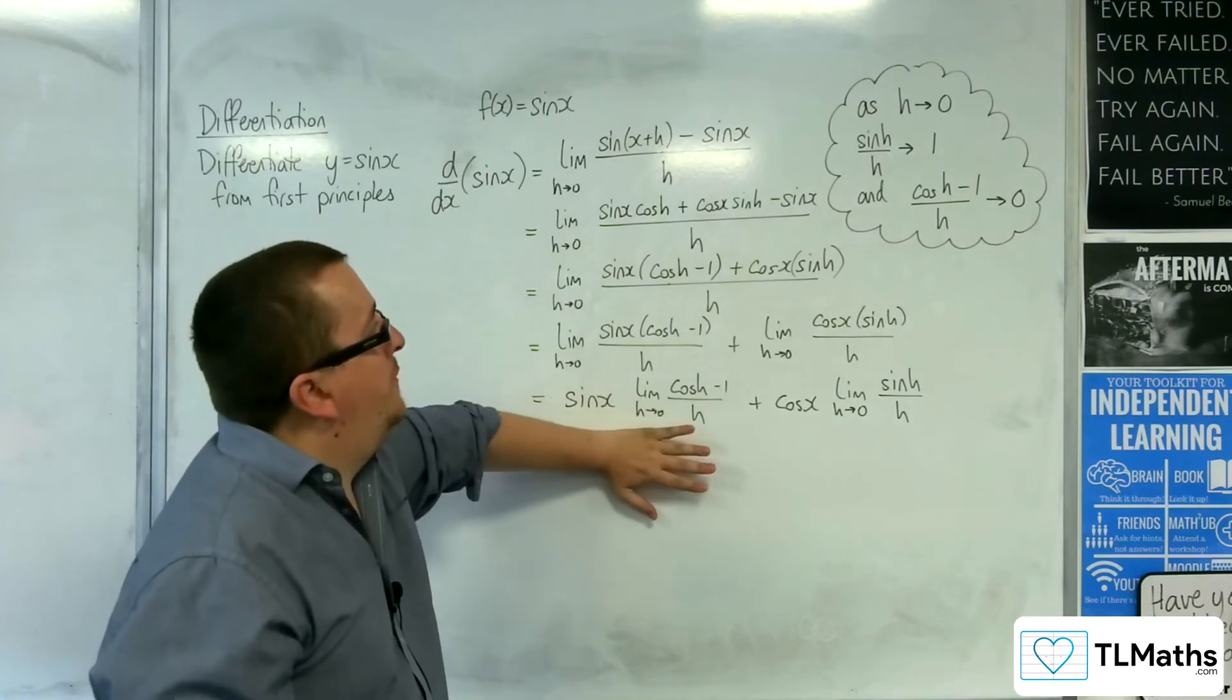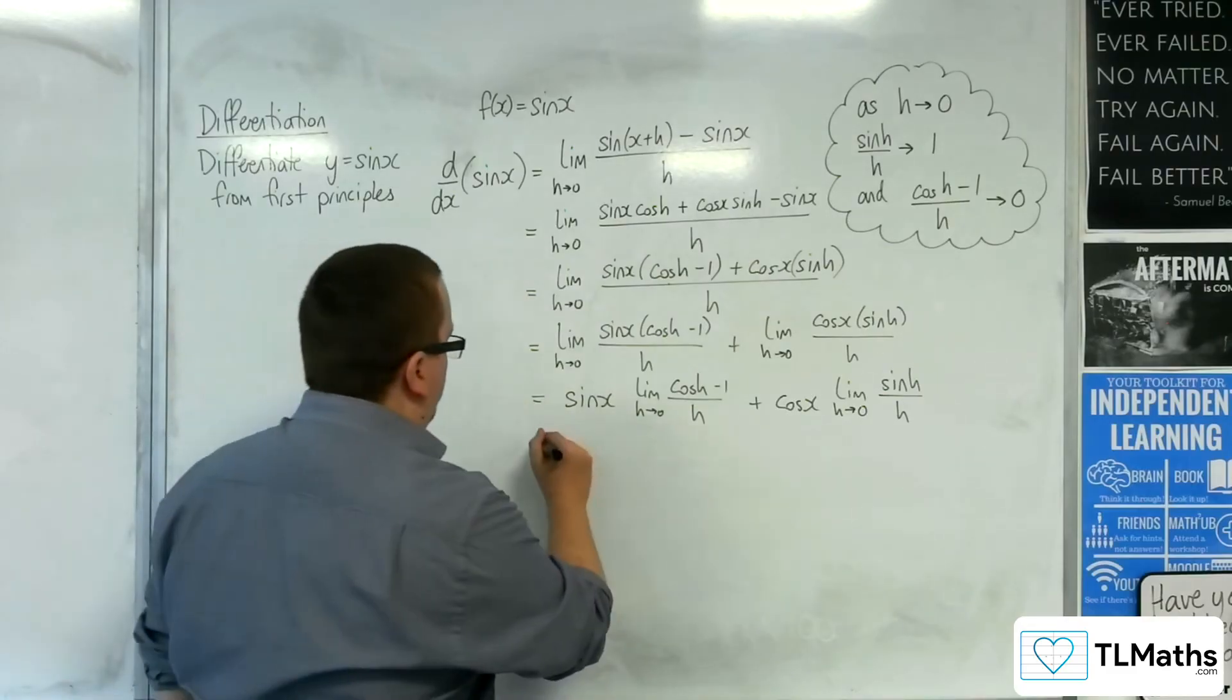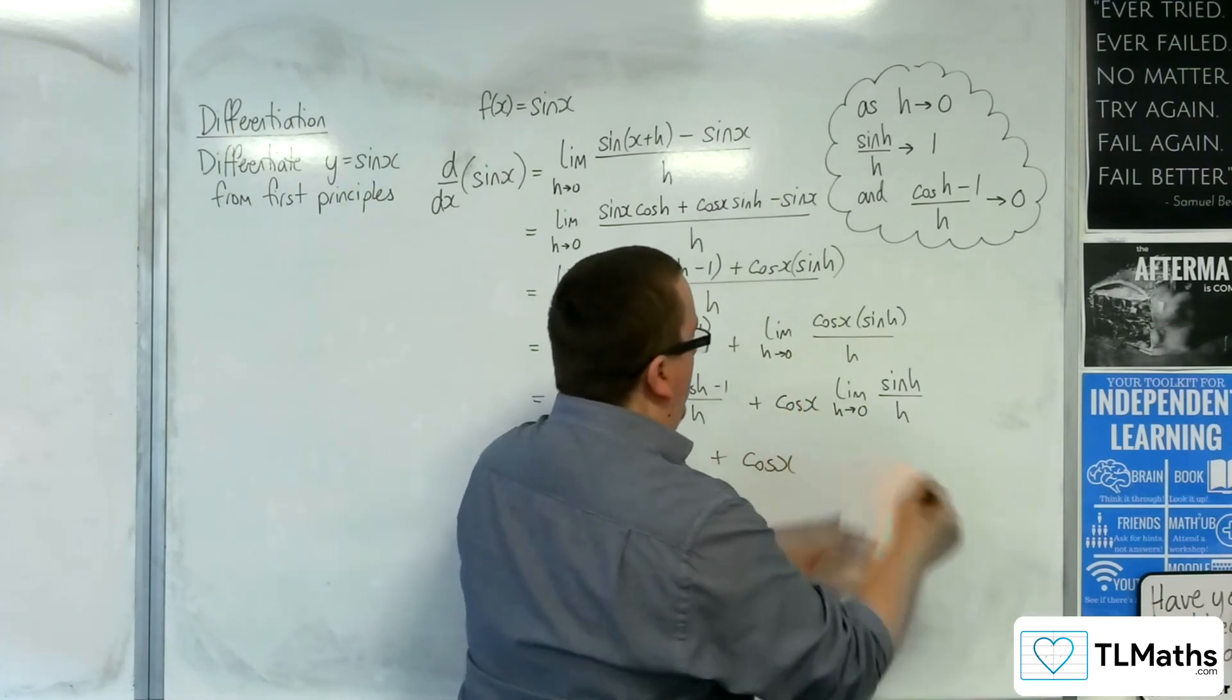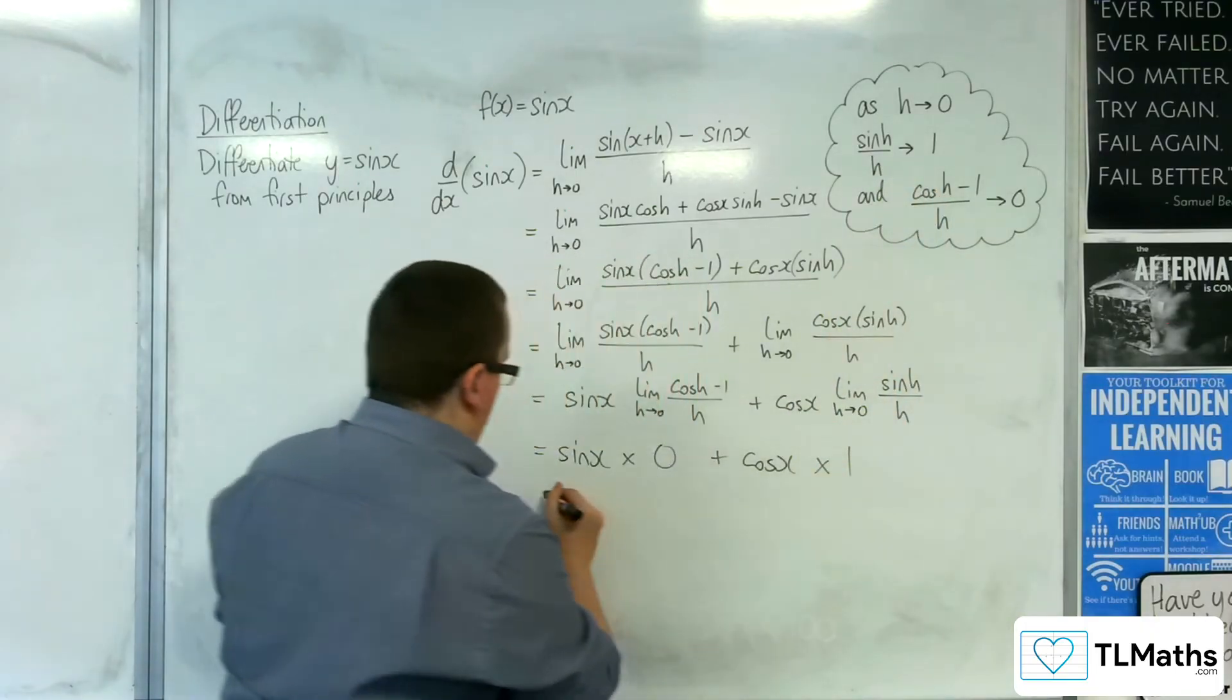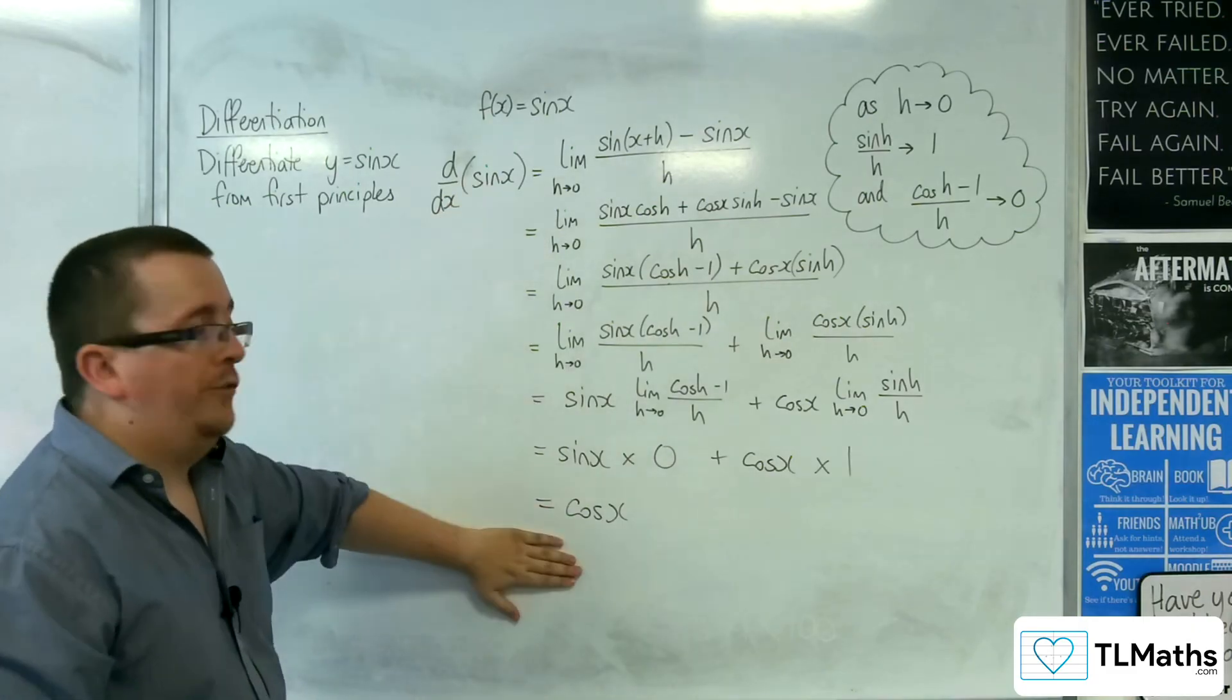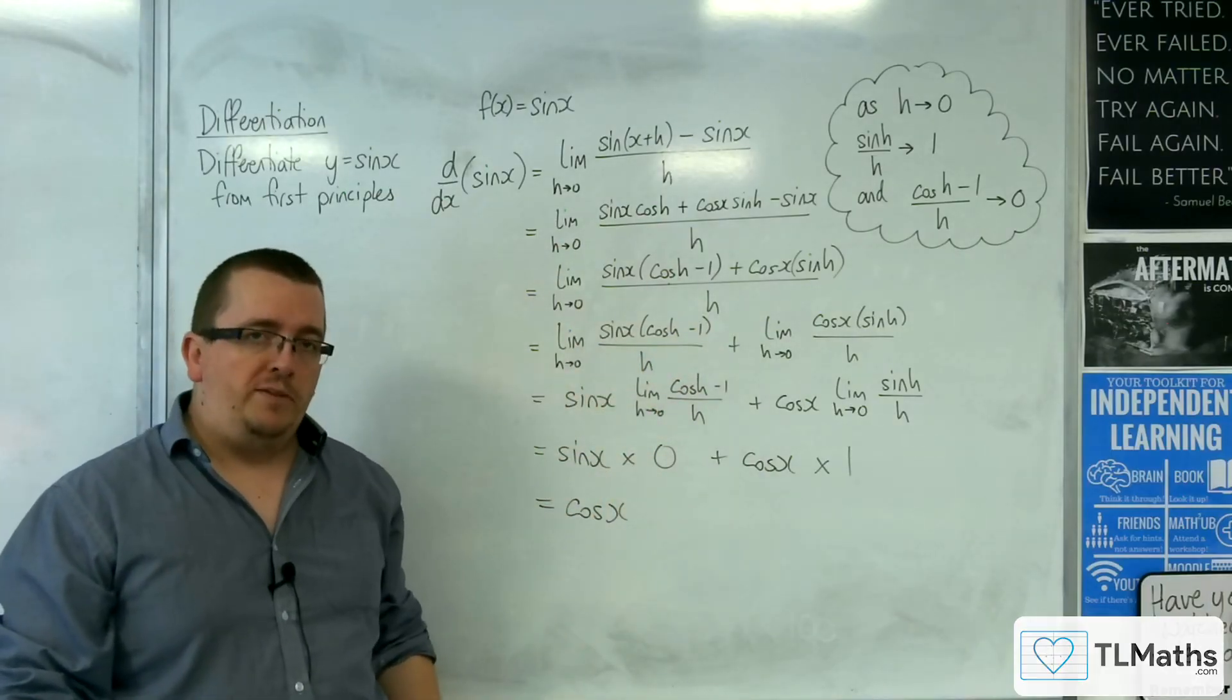Now, the limit as h tends to 0 of cosine h take away 1 over h, as given up here, is just 0. And cosine x is being multiplied by the limit as h tends to 0 of sine h over h, which we've got up here is 1. And so we have the derivative of sine x being cosine x, and that's how you can utilise the limits in order to differentiate sine from first principles.